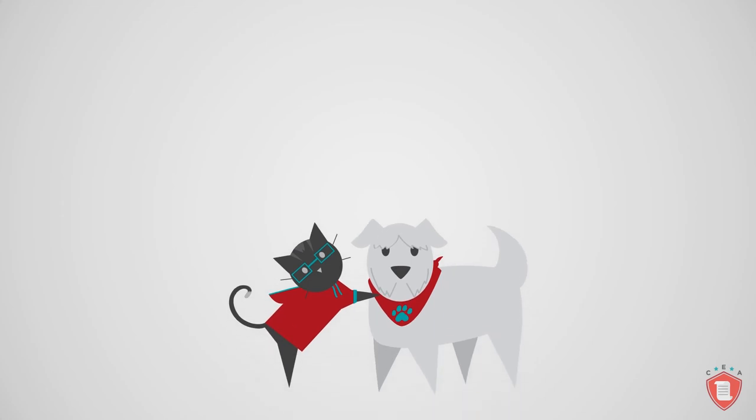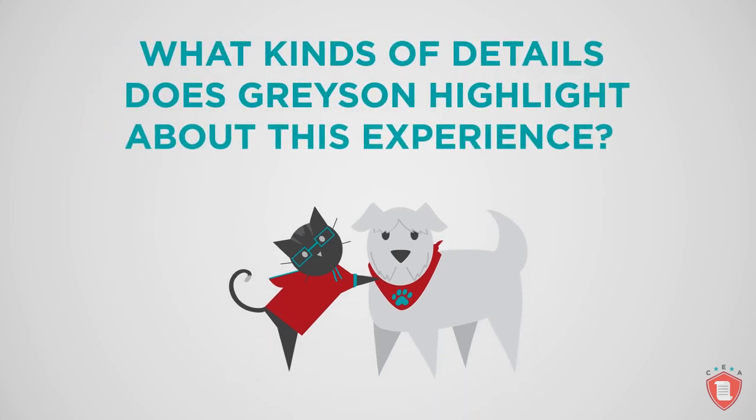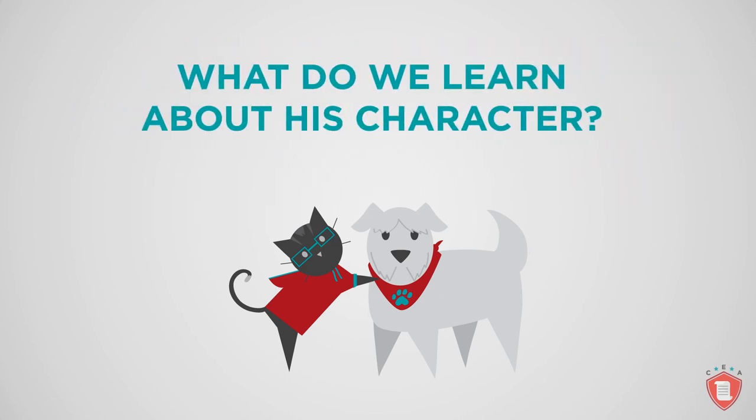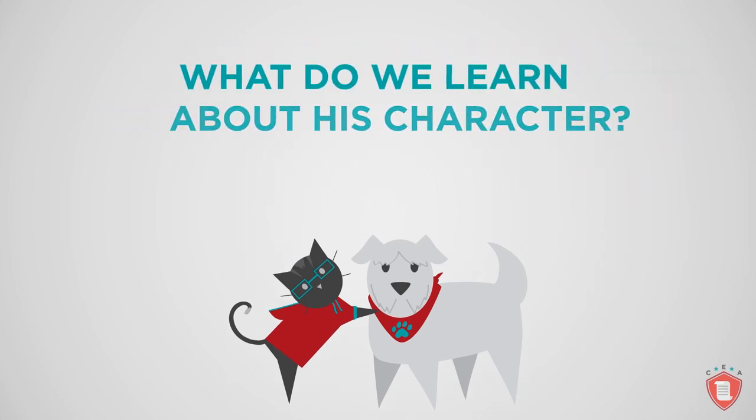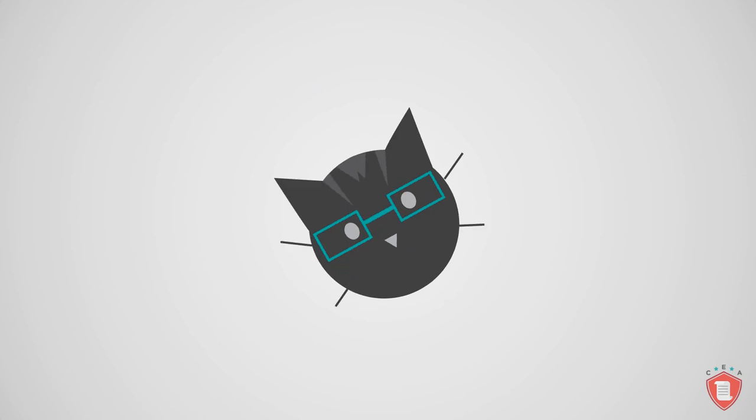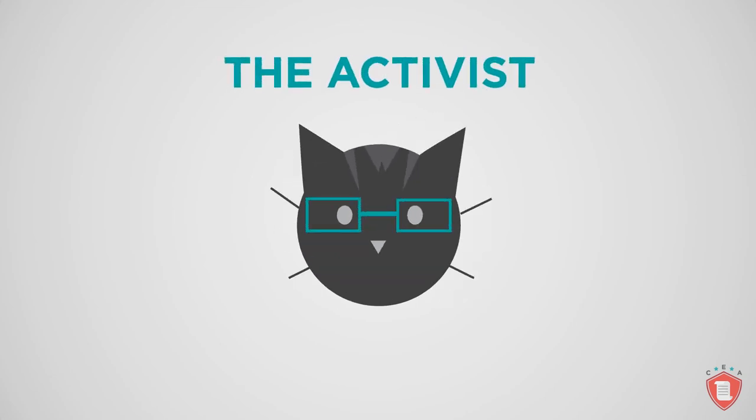Before we move on to storytelling, let's take a look at the third of Grayson's essays in which he stands up for a friend. What kinds of details does Grayson highlight about this experience? What do we learn about his character? We now present Grayson as The Activist.